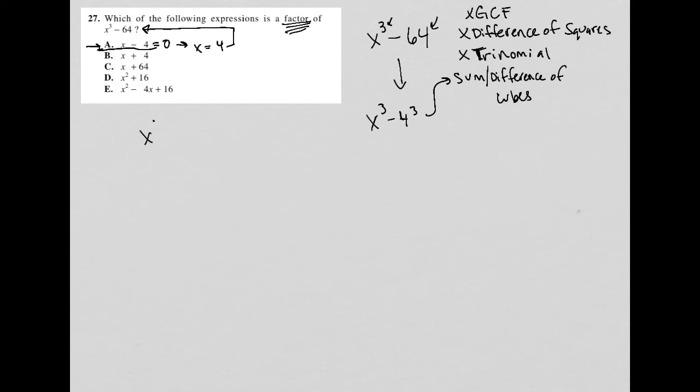When I put four, so I have x cubed minus 64. Again, I want it to be zero. When I put four in for this x, I get four cubed minus 64 equals zero, which is in fact 64 minus 64, which does equal zero, which makes me think that choice A must be the right answer.